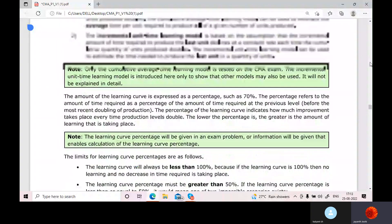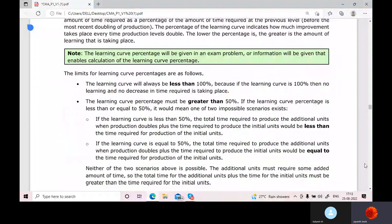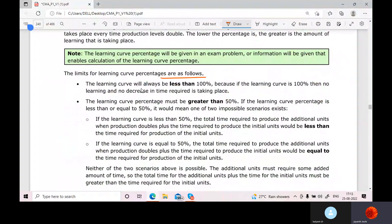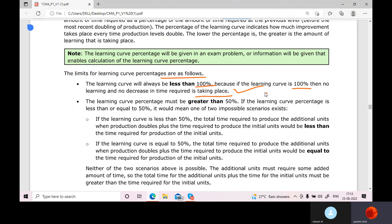We will understand about that with the help of some practical question that would make you to understand it in a better way. All this theory would be covered there. We will see what is happening. Limits of learning curve percentages. The learning curve will always be less than 100% because if the learning curve is 100% then no learning and no decrease in the time required is taking place.